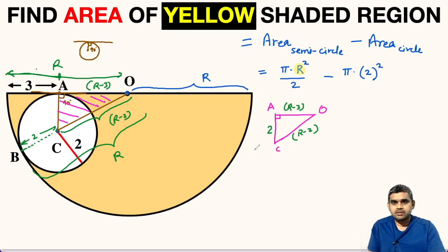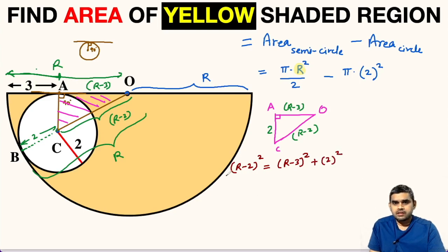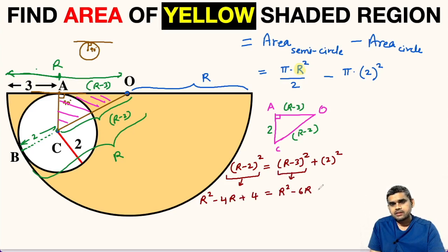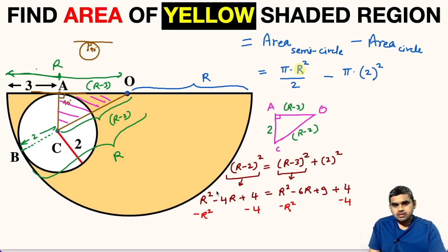Applying the Pythagorean theorem in triangle AOC: the square of the hypotenuse OC gives (R minus 2) squared equals (R minus 3) squared plus 2 squared. Expanding the left-hand side: R squared minus 4R plus 4. On the right-hand side: R squared minus 6R plus 9 plus 4. Subtracting R squared and 4 from both sides, the R squared and 4 cancel on the left, leaving minus 4R equals minus 6R plus 9.